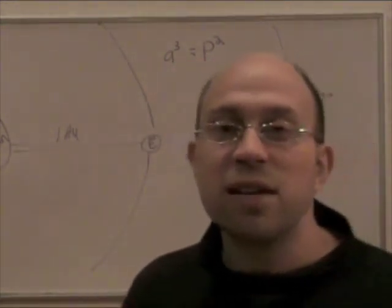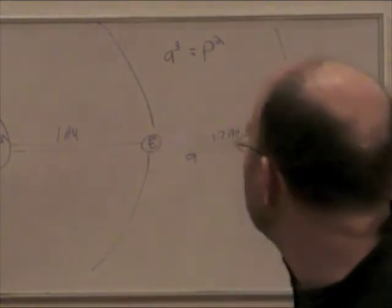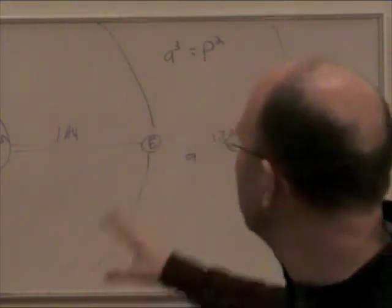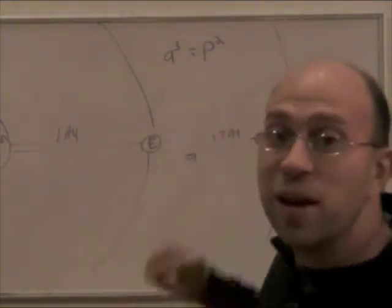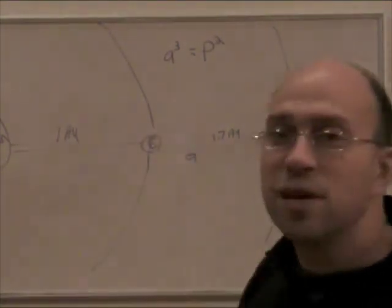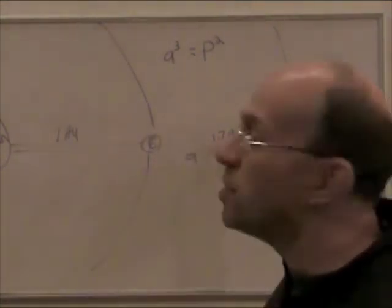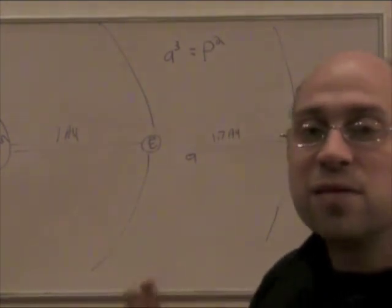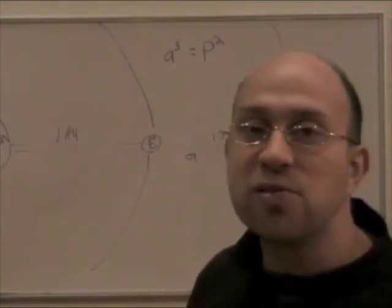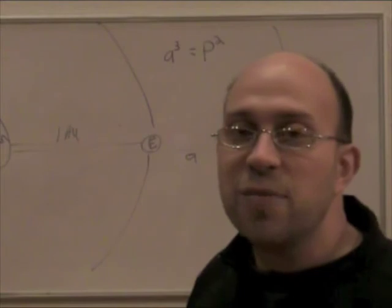And so, that was done in the late 1600s. And so, prior to that measurement, Kepler's third law gave us a scale model of the solar system. We knew all the relative sizes of the orbits, but we didn't know any one absolute distance. This measurement of the parallax of Mars gave us that absolute measurement.